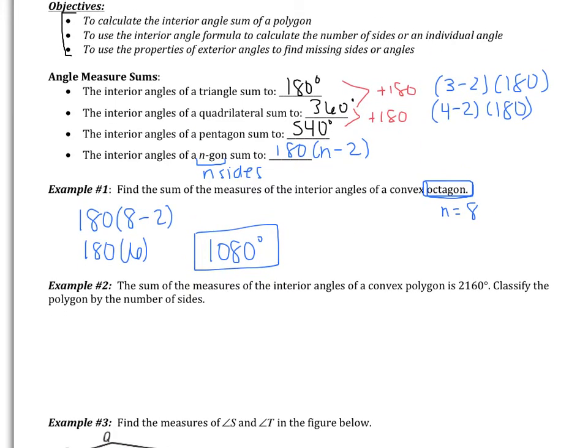You try example 2. It says the sum of the measures of the interior angles of a convex polygon is 2160 degrees. Classify the polygon by the number of sides. So use this formula above to solve for the number of sides. Pause the video and come back when you are finished, please.